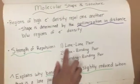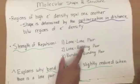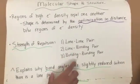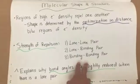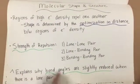The strongest repulsions are those between two lone pairs, followed by repulsions between a lone pair and a bonding pair. The weakest repulsion is that between two bonding pairs. This explains why bond angles are slightly reduced when there is a lone pair present.